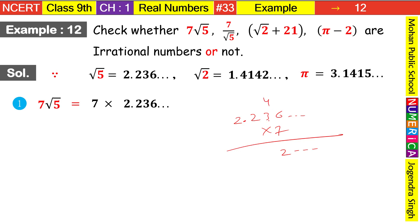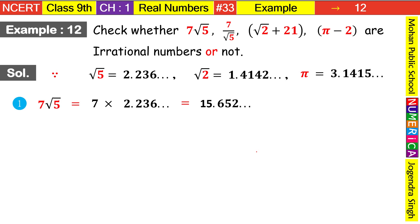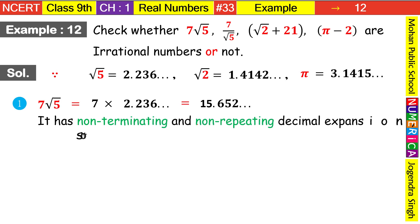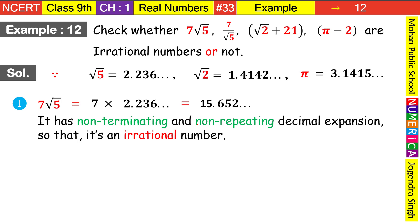Carrying through: 7×6=42, write 2 carry 4; 7×3=21+4=25, write 5 carry 2; 7×2=14+2=16, write 6 carry 1; decimal carries down; 7×2=14+1=15. So you've learned how to multiply a non-terminating decimal by a regular number — the endless portion carries as-is. The answer is 15.652..., which is non-terminating and non-repeating, so it is an irrational number.